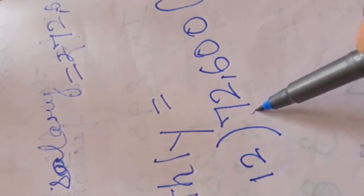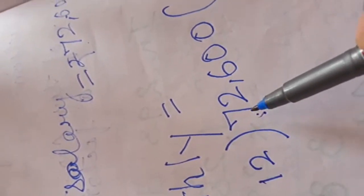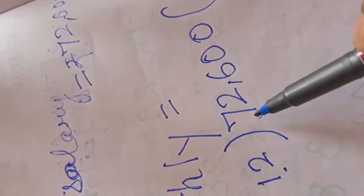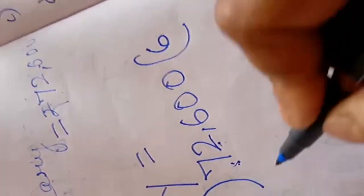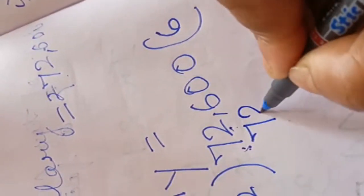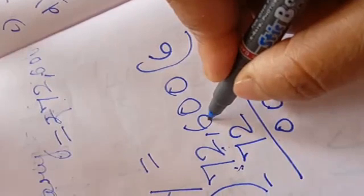Start from the extreme left side. Maximum place value is 70,000. 7 is less than 12. Then, I will take the 2 place values, it is 72. In 12's table, 12 sixes are 72. Subtract it, 0, 0. Now, 6 will come.